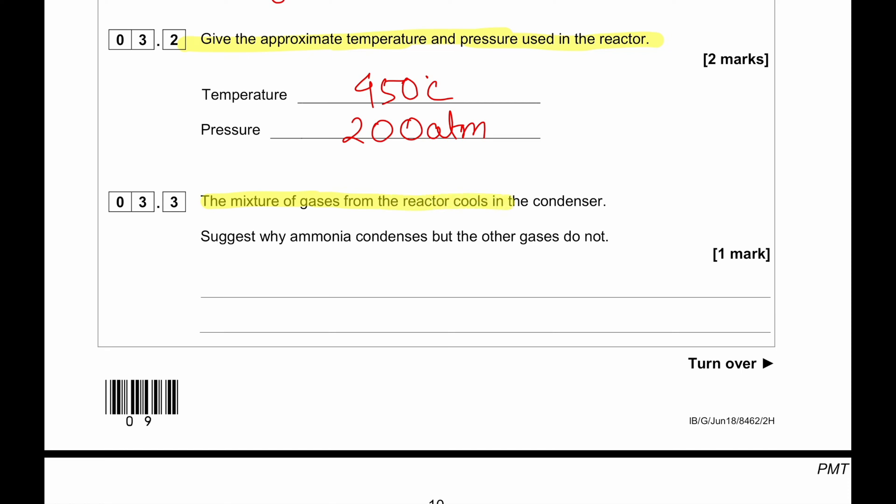The mixture of gases from the reactor cools in the condenser. Suggest why ammonia condenses but the other gases do not. So basically what we are going to say is ammonia has a higher boiling point. Since ammonia has higher boiling point, anything that has higher boiling point condenses faster. For example, if water boils at 100 degrees Celsius and you are at room temperature 25 degrees Celsius, the water vapor that boils at 100 degrees Celsius, if it is brought to your room temperature 25 degrees Celsius, it will already condense into a liquid.